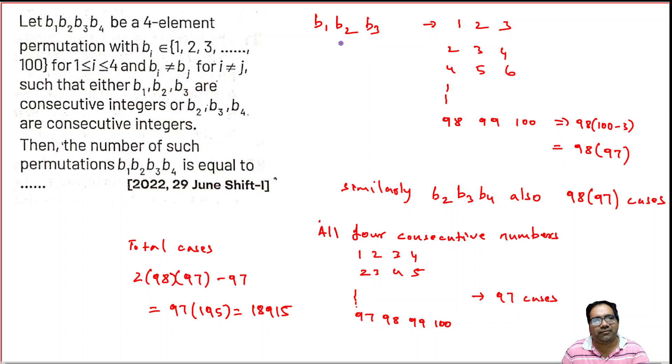But the problem is, if we add directly both of these, we will get the cases where all four are continuous also. So for example, if we take a number like 20, 21, 22, 23, then this case is covered here and this case is covered here. So there is a kind of double counting. Last three numbers are continuous, which is covered here. First three numbers are continuous, which is covered here. So we are kind of double counting these numbers where all four numbers are continuous.